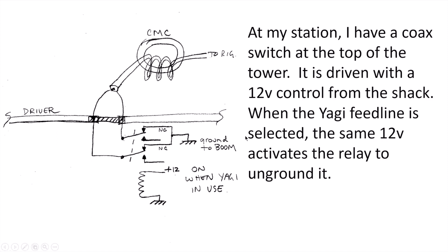At my station, I've got a coax switch at the top of the tower to select the various feed lines to the different Yagis. That 12 volt control line, for example when it selects the 80 meter Yagi, will activate this relay on the 80 meter Yagi and open it up. So whenever the 80 meter Yagi is live, we have ungrounded the driven element. The same with the OptiBeam and the same with my 40 meter Yagi.